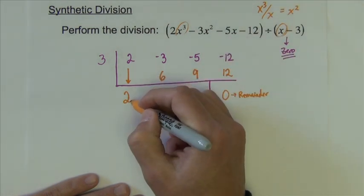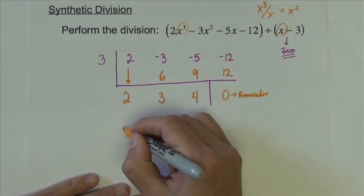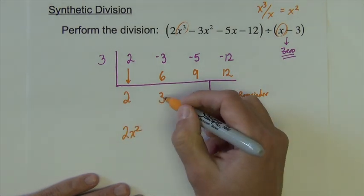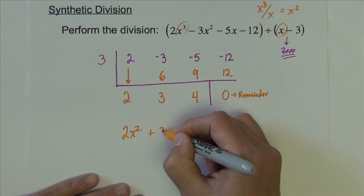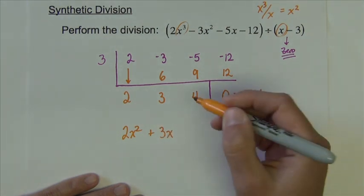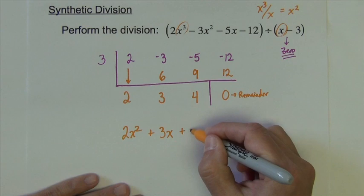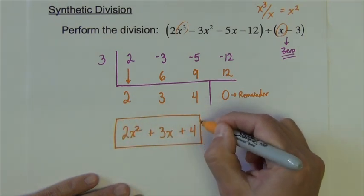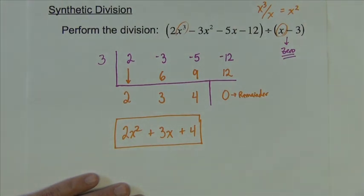That's exactly what this is. This 2 is representing the x squared term. And then this positive 3 is representing the next term, which is x. This positive 4 is representing the next term, which is just the constant term 4. There is no remainder, so I'm not adding anything else to that. This is our result.